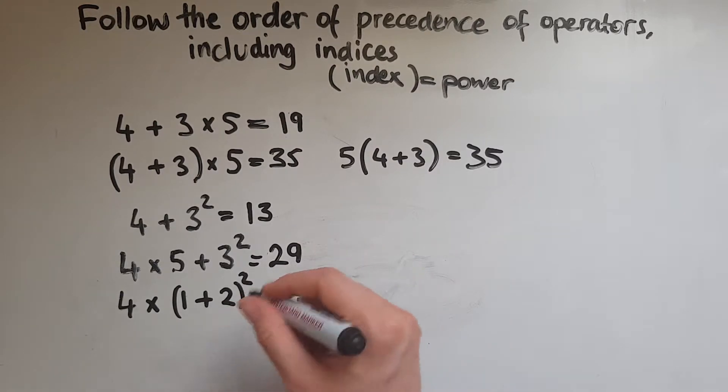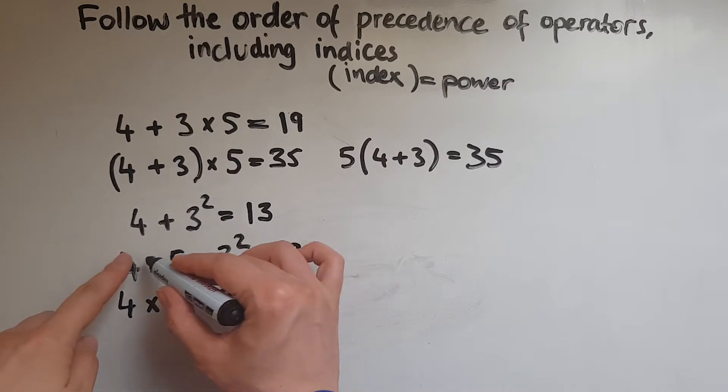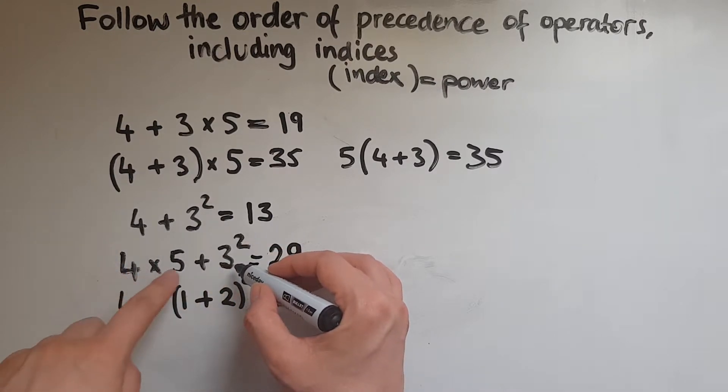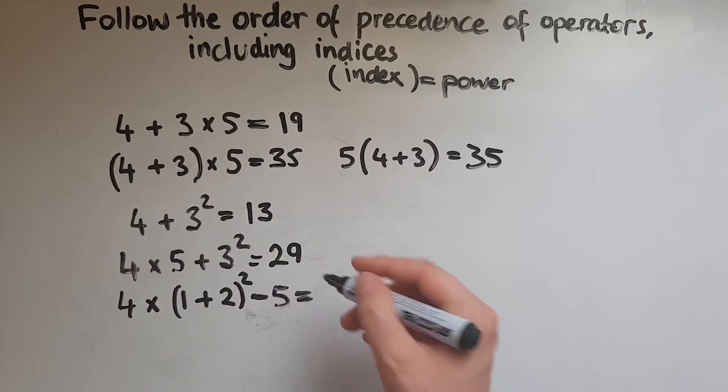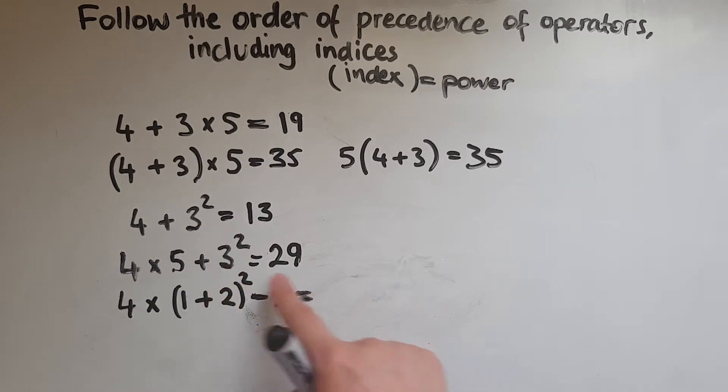We haven't got any brackets because if we had brackets here that means we'd do these first, 4 times 5 is 20, add 3 and then square it all together. But we don't have that. That's why we're squaring the 3 only, because that 2 is on top of 3 only.